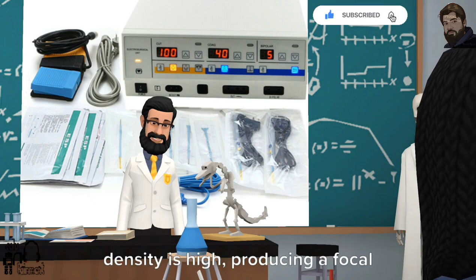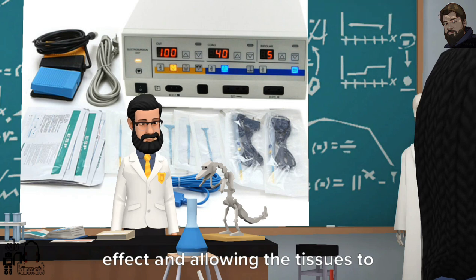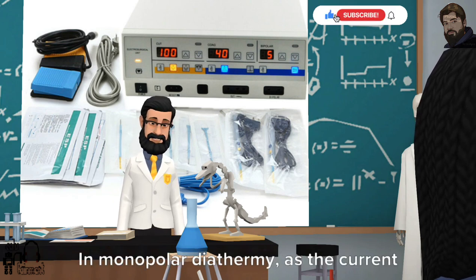Due to the small surface area at the point of the electrode, the current density is high, producing a focal effect and allowing the tissues to heat up rapidly.